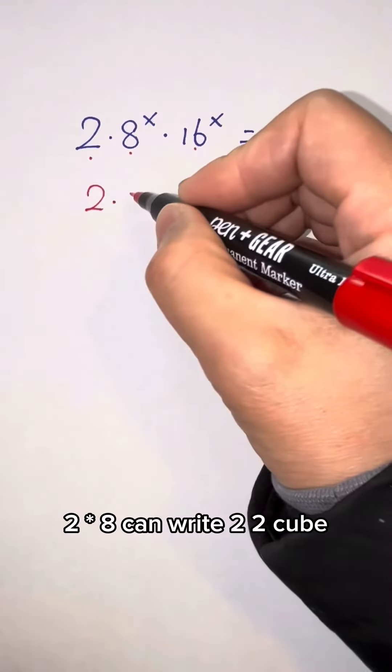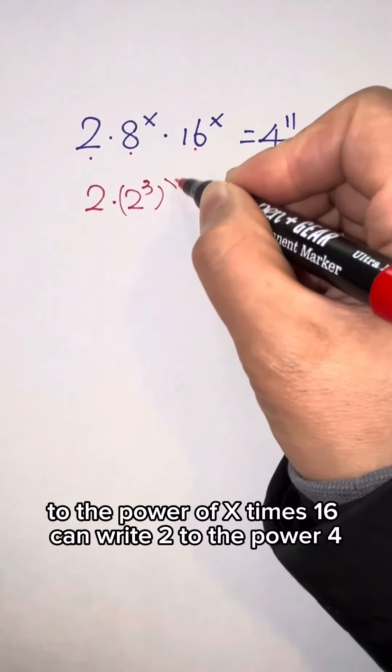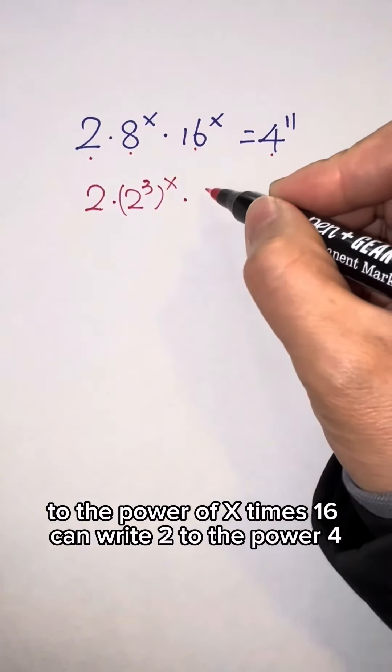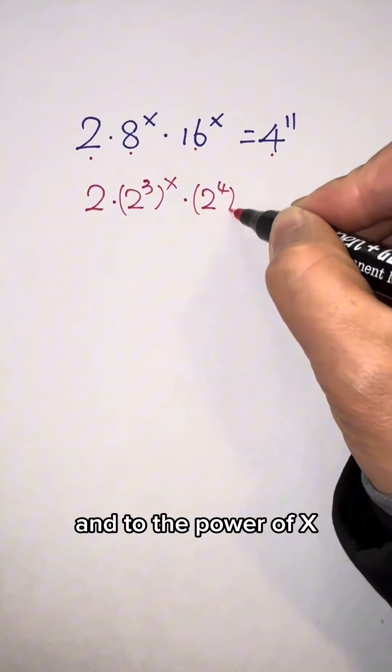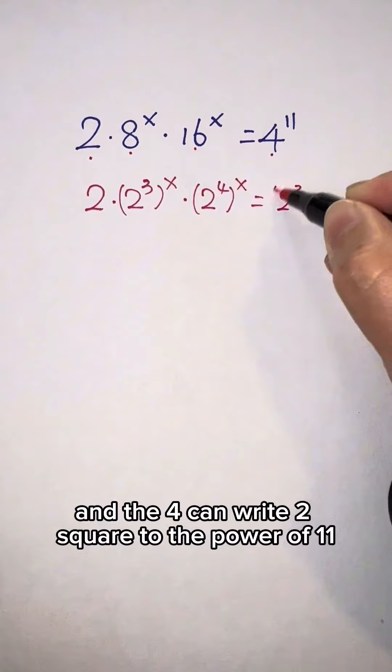2 times 8 can write 2 cubed to the power of x. Times 16 can write 2 to the power of 4 to the power of x. And 4 can write 2 squared to the power of 11.